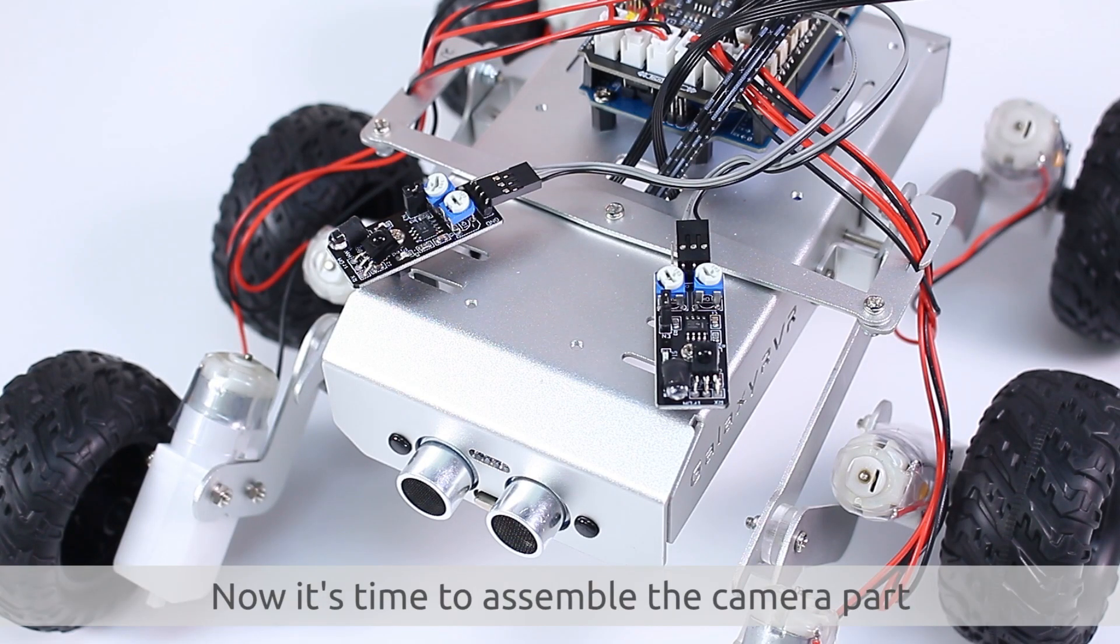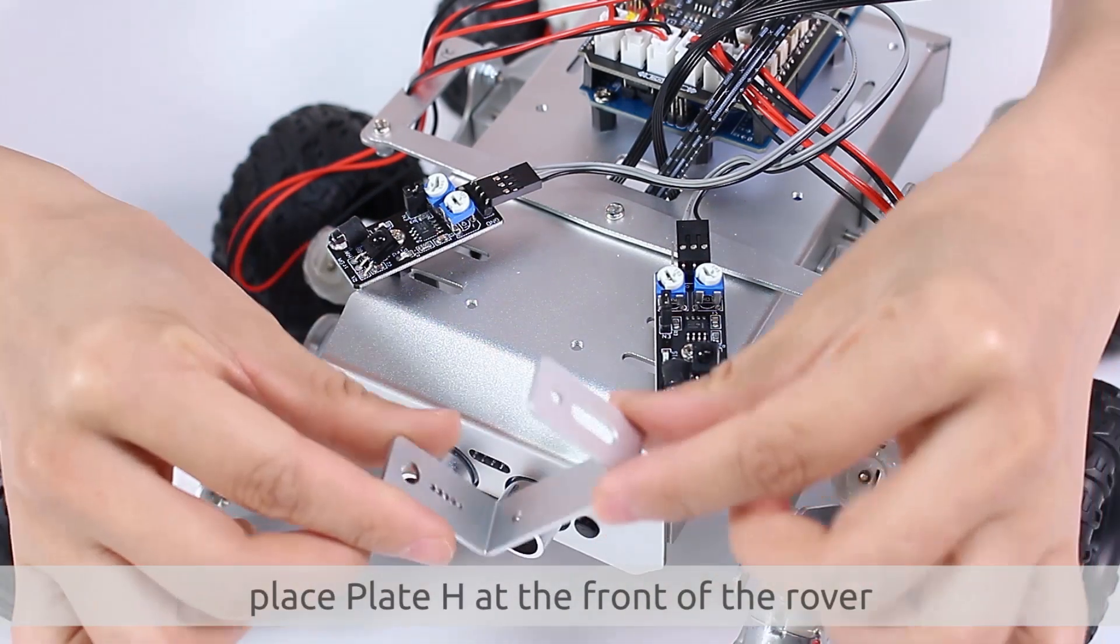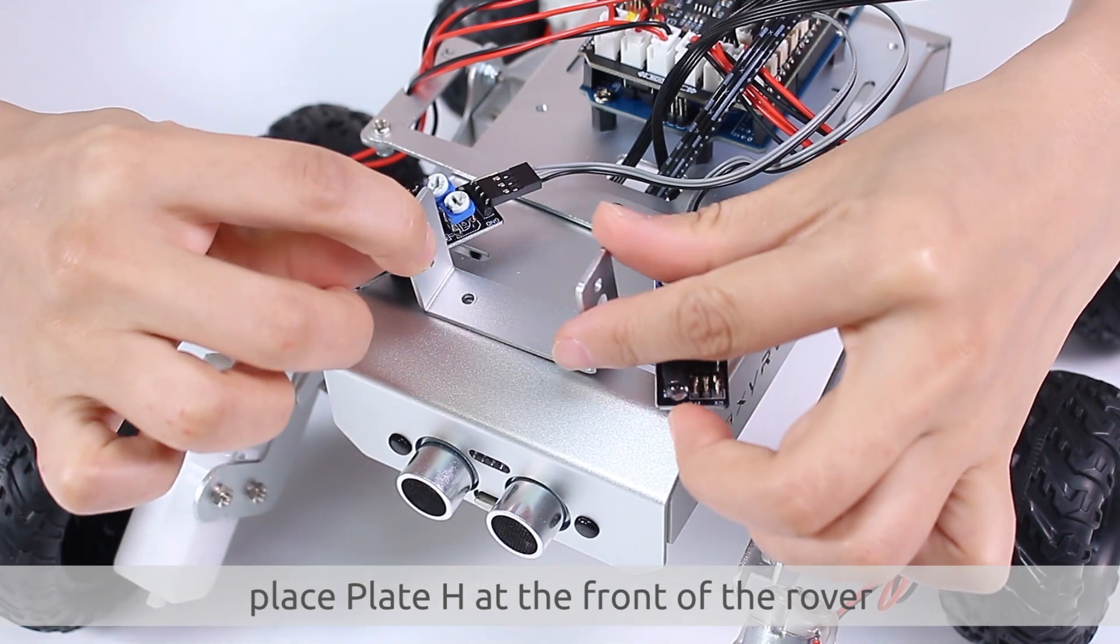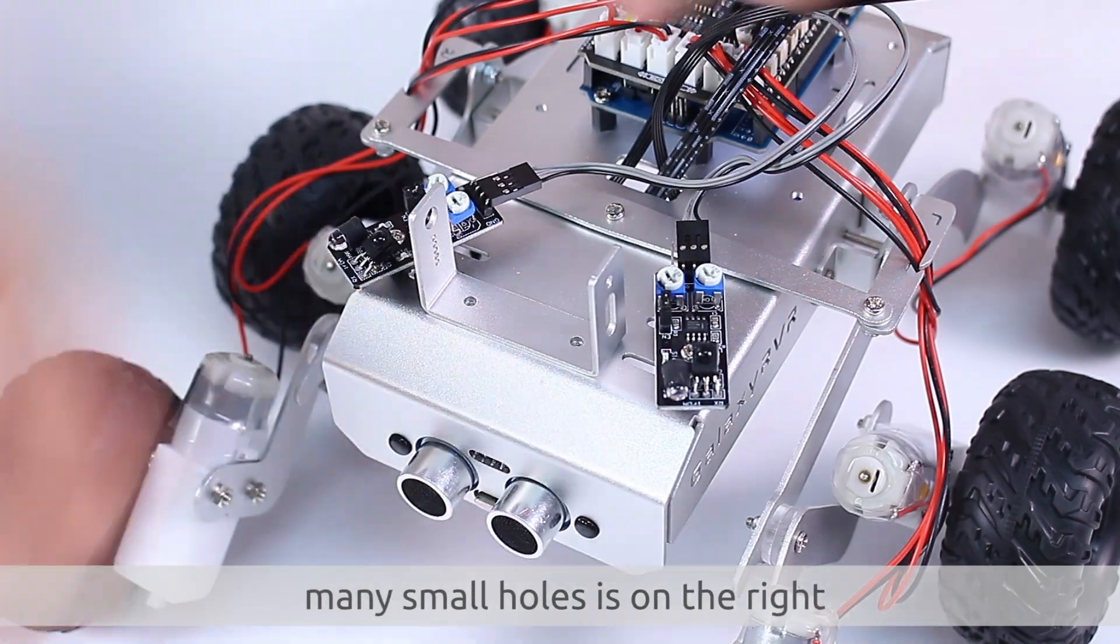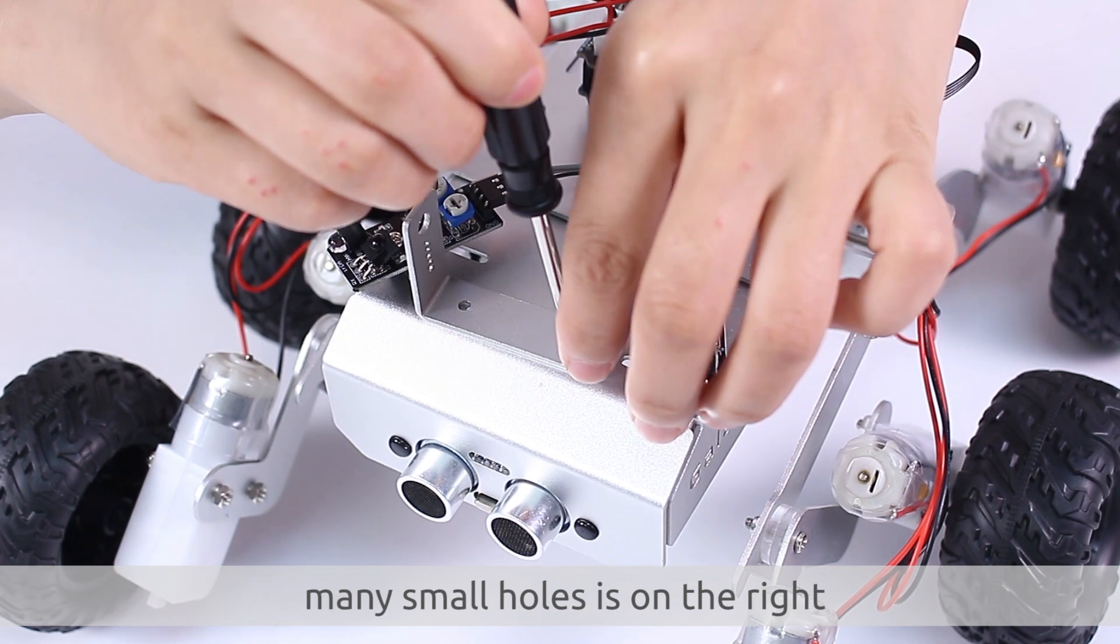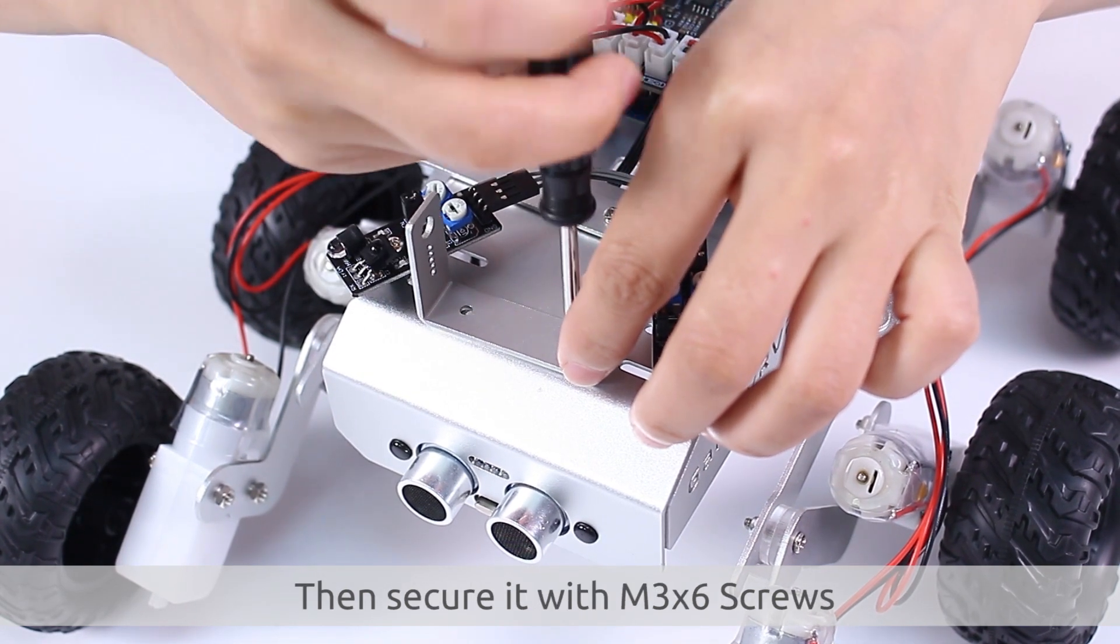Now it's time to assemble the camera part. First, place plate H at the front of the rover, making sure the side with many small holes is on the right. Then, secure it with M3 by 6 screws.